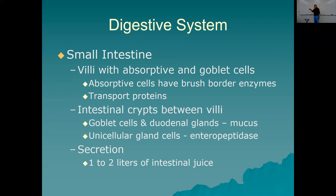Intestinal crypts between villi contain goblet cells and duodenal glands that produce mucus. There are also unicellular gland cells that synthesize enteropeptidase, an inactive protein-cleaving enzyme that helps activate pancreatic proteases.